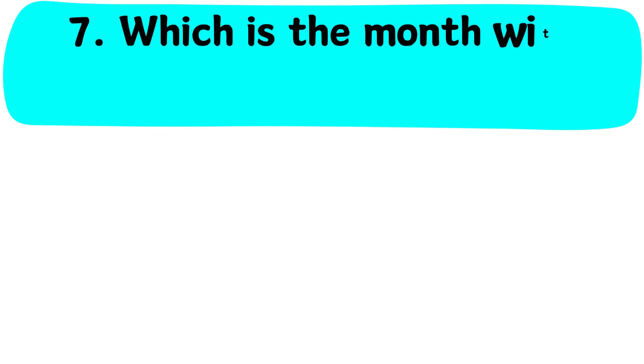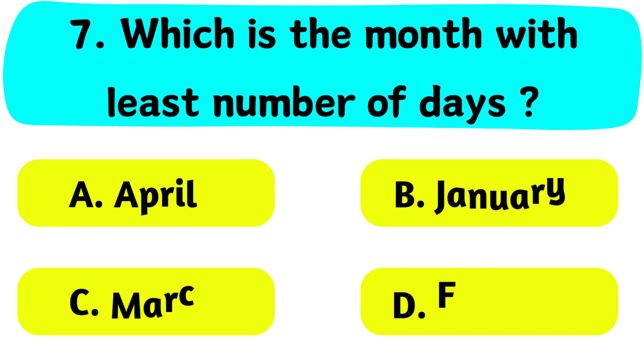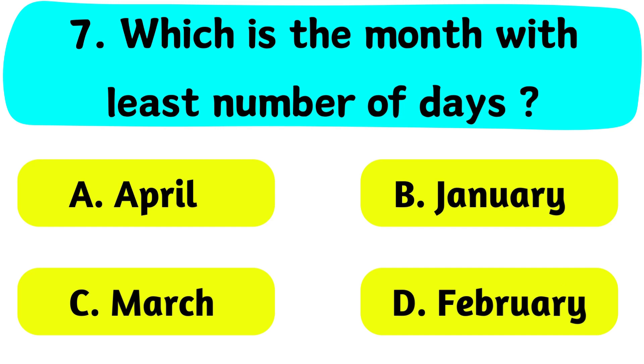Question No. 7. Which is the month with the least number of days? A. April, B. January, C. March, D. February.